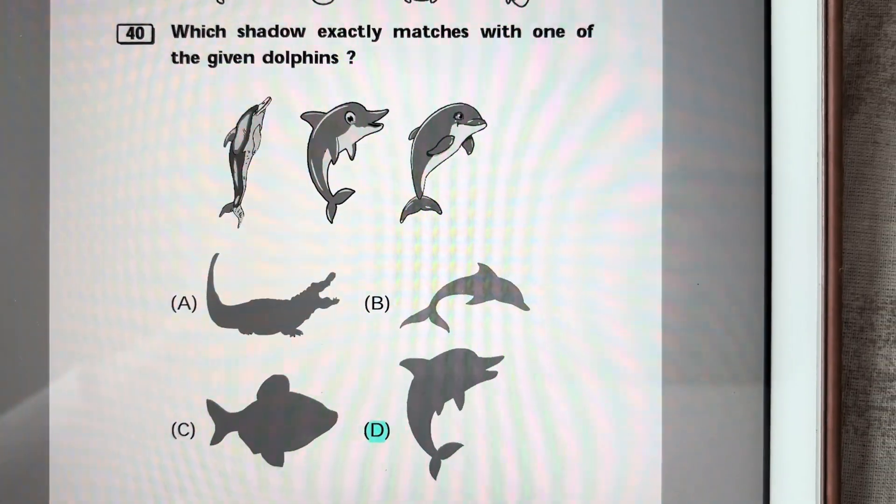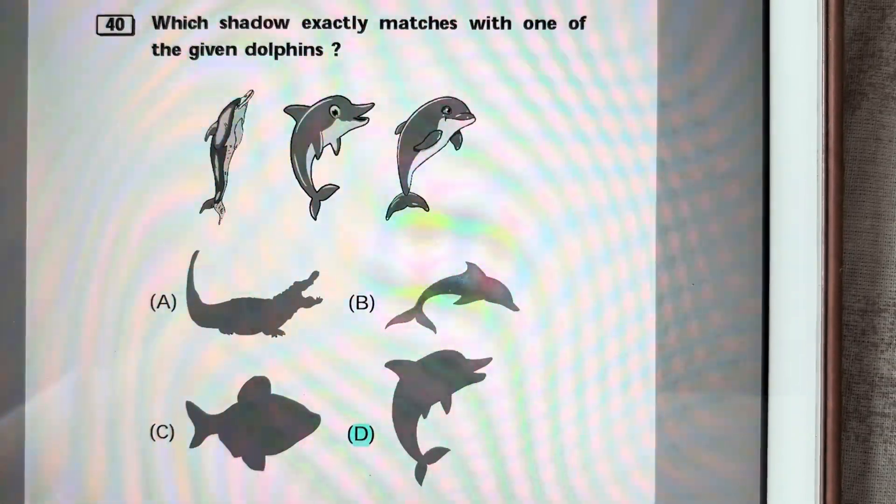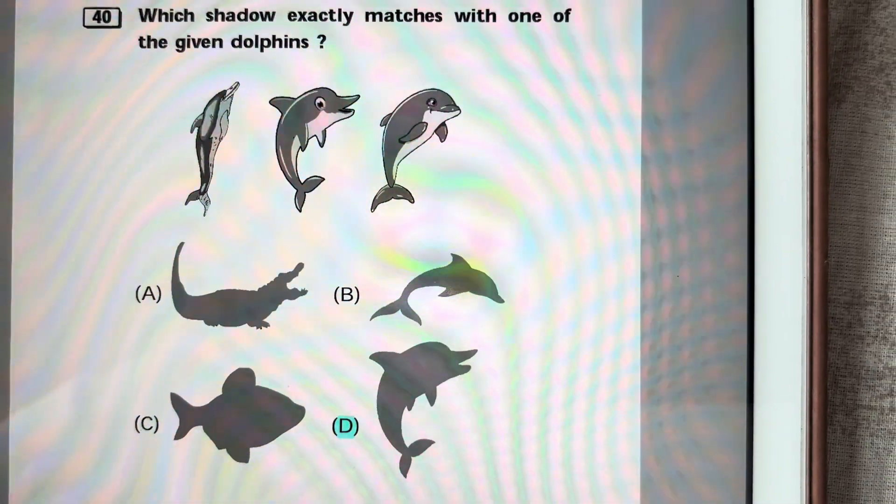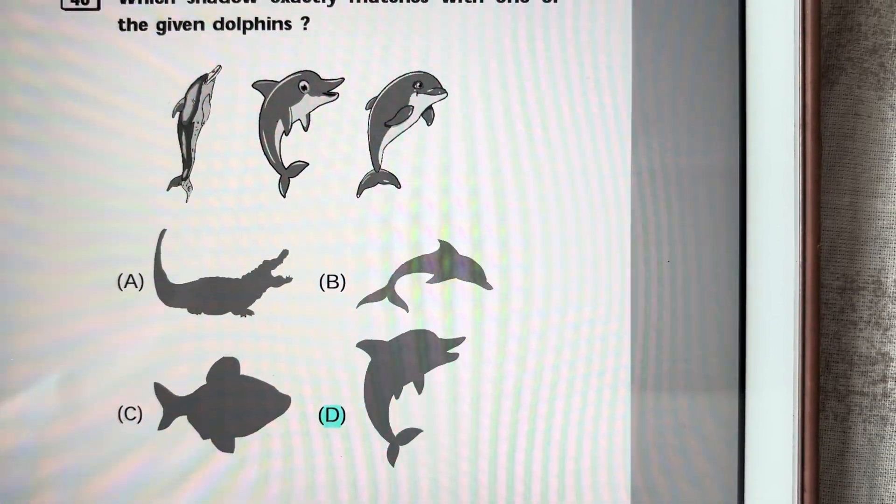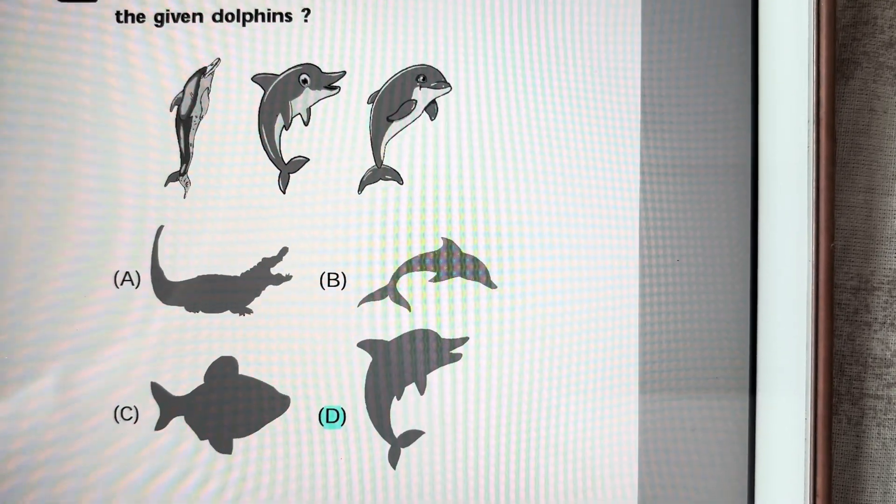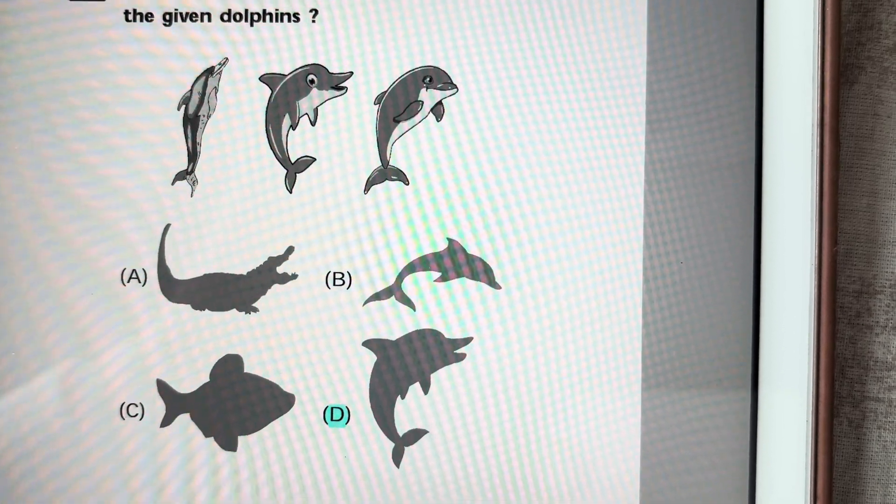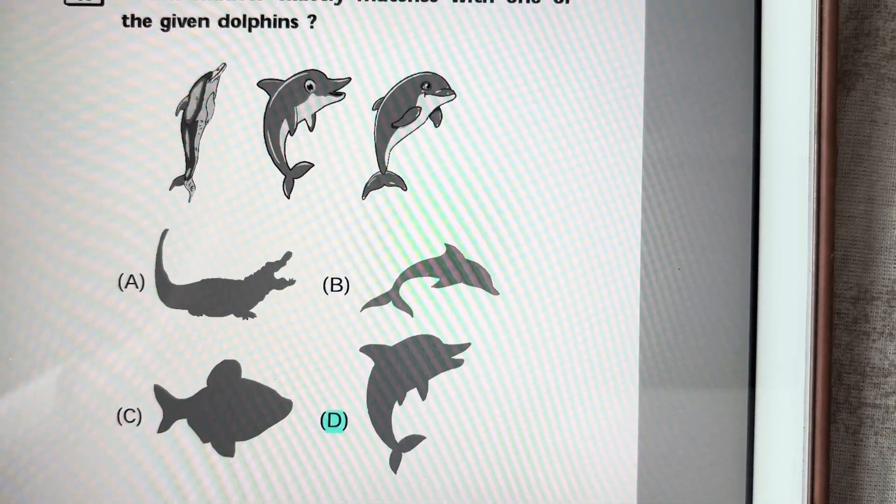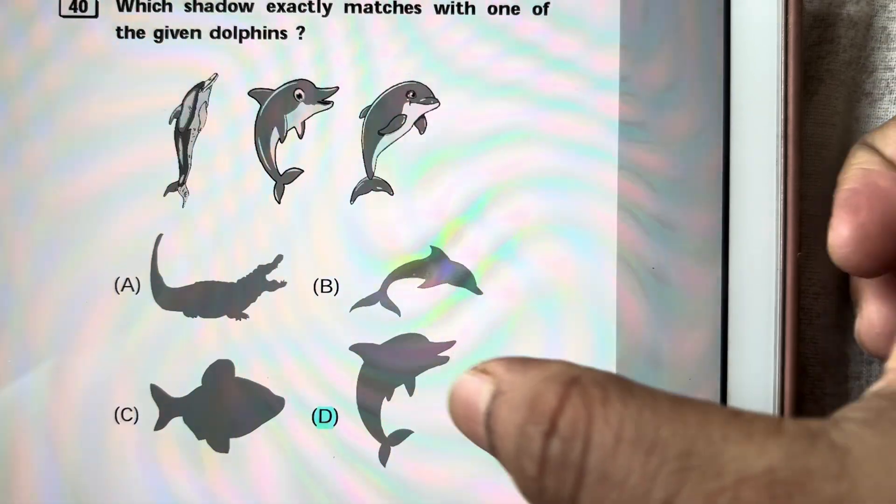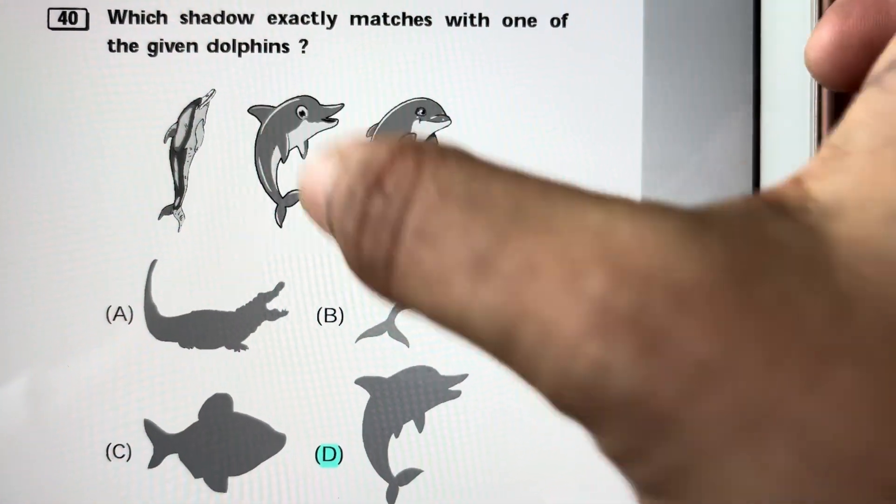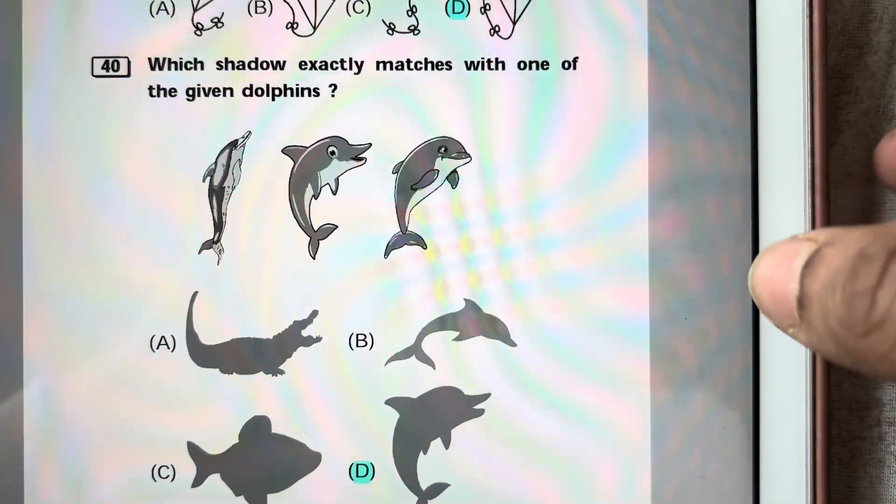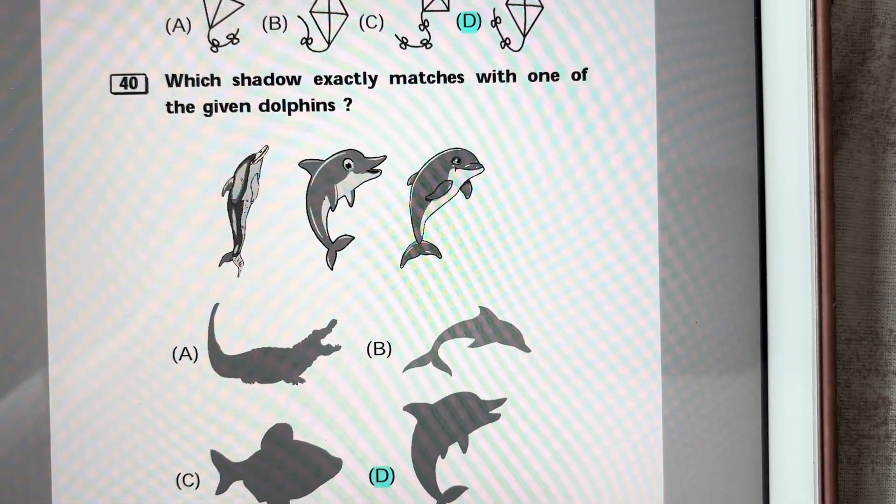Which shadow exactly matches the given dolphin? First, A and C are not pictures of dolphins, so they are excluded. Then D matches with this one. Answer is D. Best of luck. Thank you.